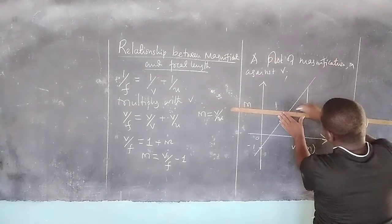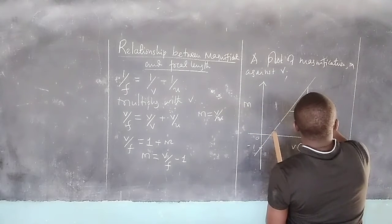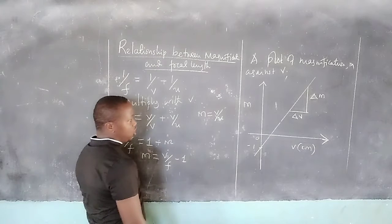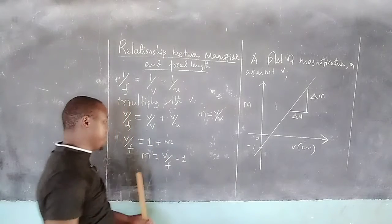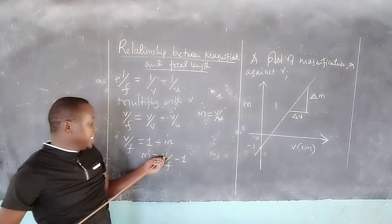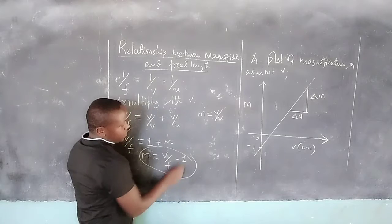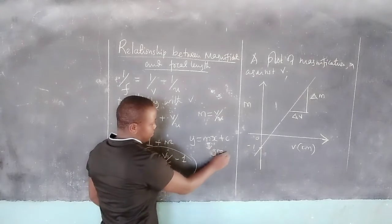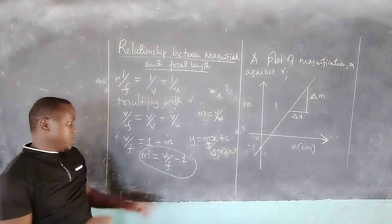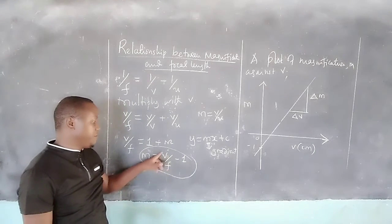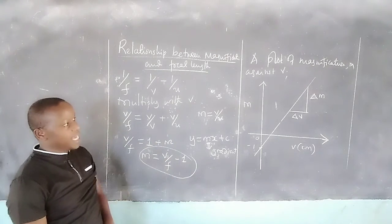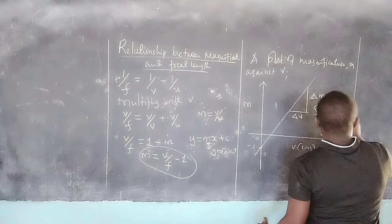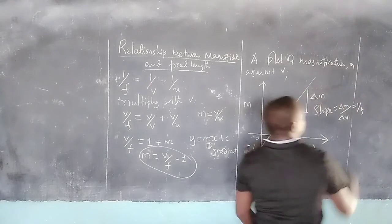The gradient of this line — change in M over change in V — gives us the reciprocal of F, that is 1/F. Comparing this equation with the equation of a straight line, the coefficient of V, which is our X-axis component, will be 1/F. So the slope, which is ΔM/ΔV, gives us 1/F.